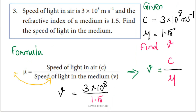Next question: the speed of light in air is 3 × 10⁸ m/s, and the refractive index of a medium is 1.5. Find the speed of light in the medium. The refractive index, mu, is given as 1.5.